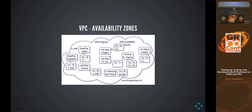Here's what availability zones look like. US West is a region, and they have 2A, 2B, and 2C — those are the availability zones, groups of things in separate data centers. If one is taken out by a cataclysmic event, in theory you have two more. Everyone has at least two as a minimum so that some redundancy can be done.